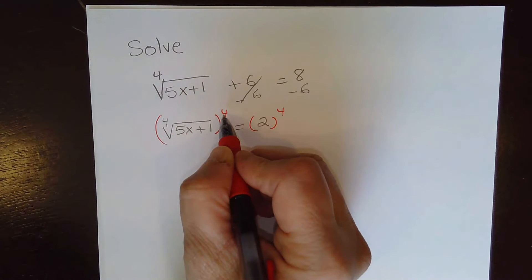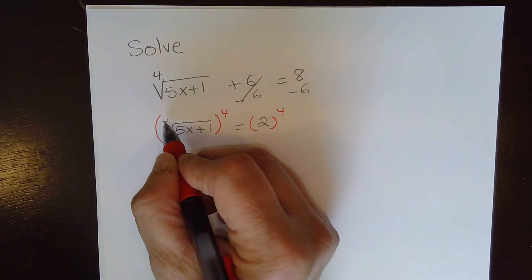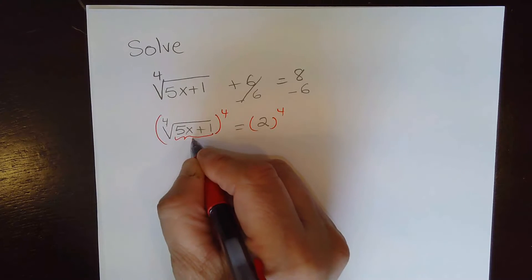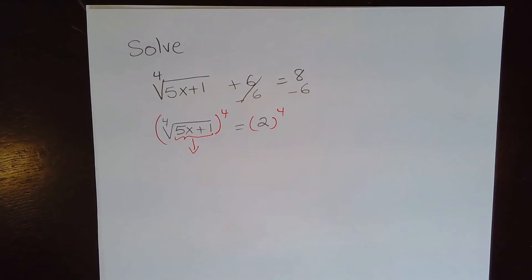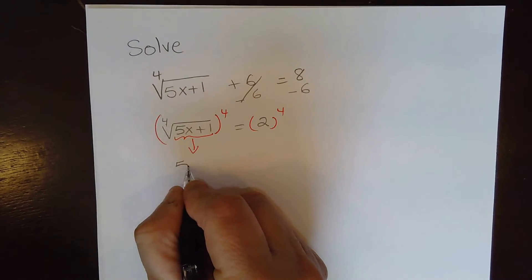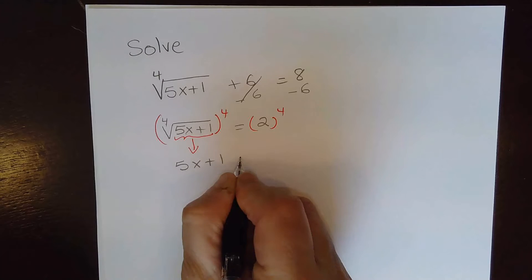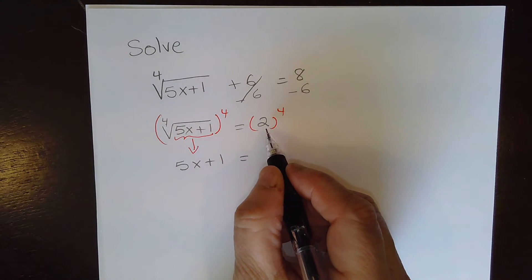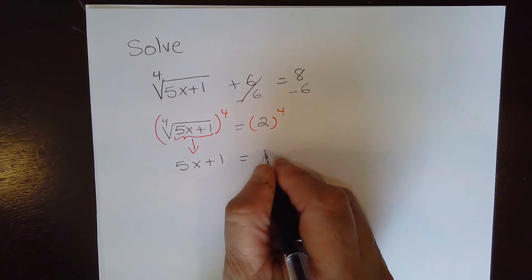So the 4th power cancels the 4th root and what comes out is the radicand, 5x plus 1. And then simplifying 2 to the 4, 2 to the 4 is 16.